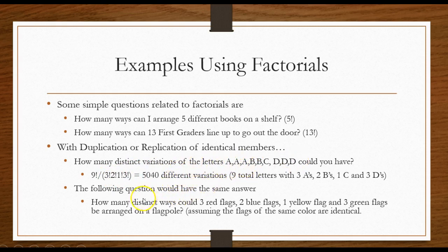This same question could have been asked this way. How many distinct ways could three red flags, two blue flags, one yellow flag, and three green flags be arranged on a flagpole. Nine flags, three red, two blue, one yellow, three green. Just, you know, I've seen these questions asked that way. I've seen I've got nine books on a shelf, three identical math books, two identical psychology books, one history book, and three identical religion books. How many ways could I arrange those books? The key there is that you've got replication, so I've got to use this formula.